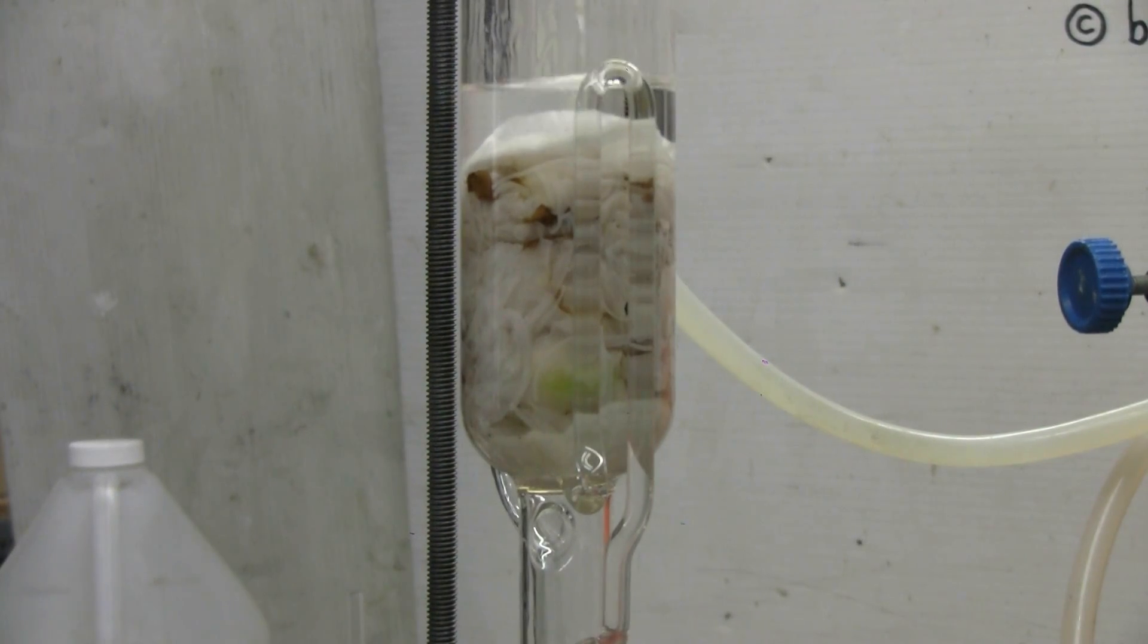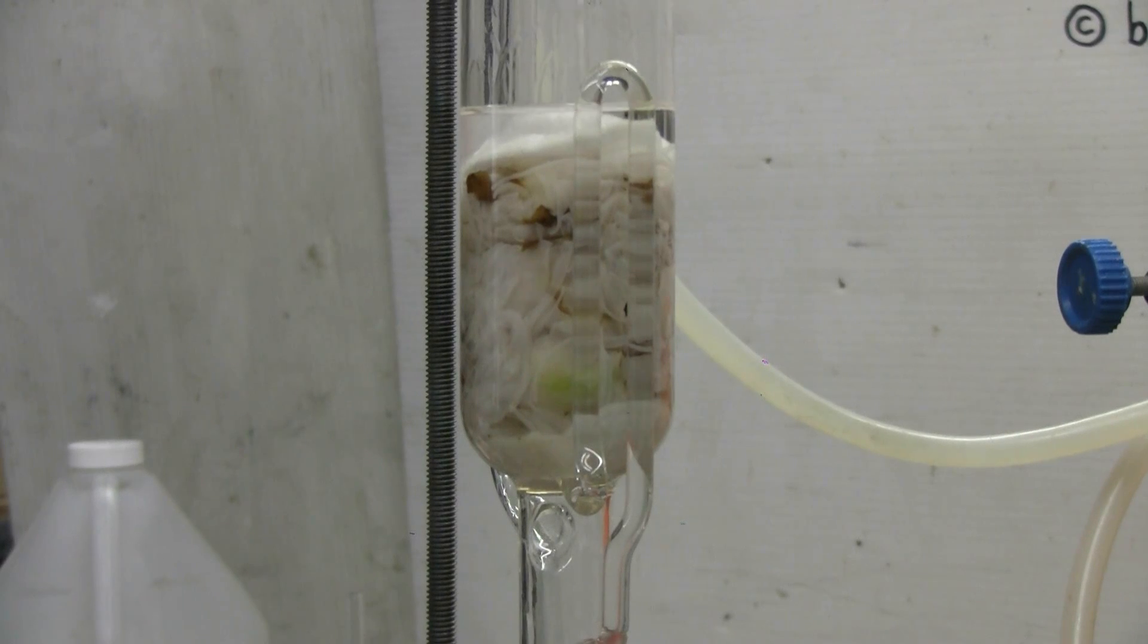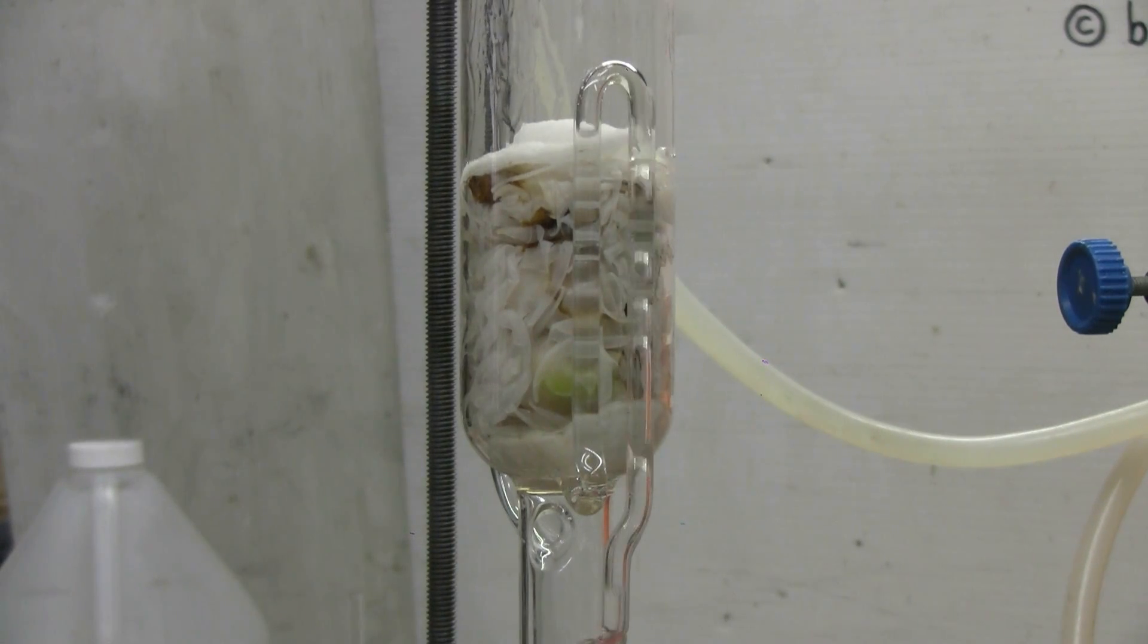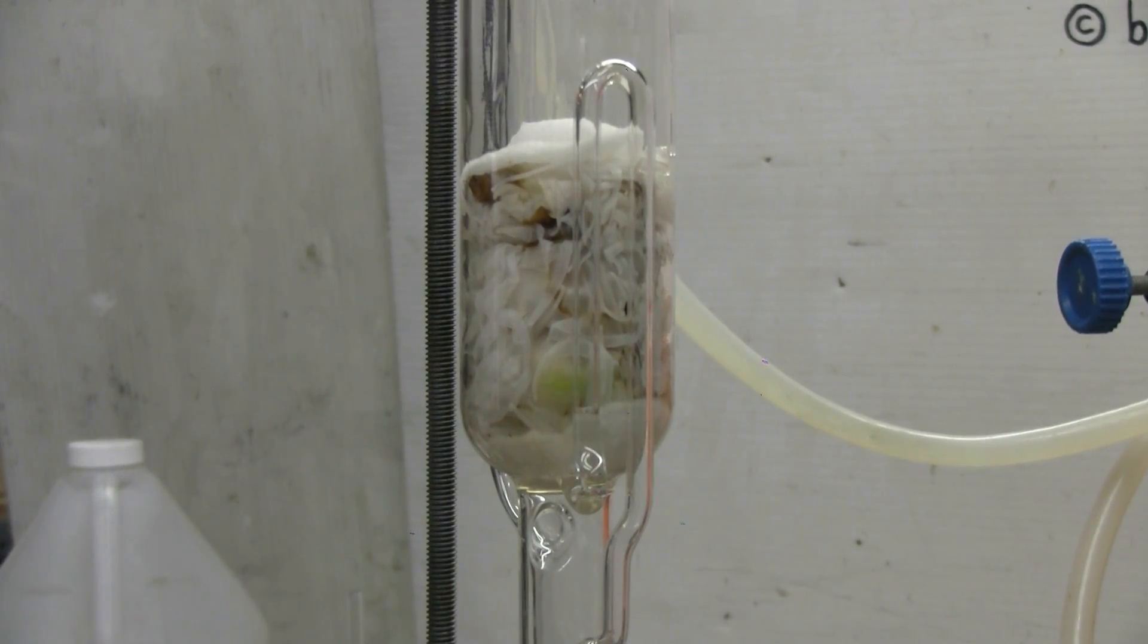This is cycle number ten. Nearly all of the color has been extracted from the peony flower petals in the Soxhlet chamber. However, I'll be stopping at this point and switching over to simple distillation to recover my ethanol.